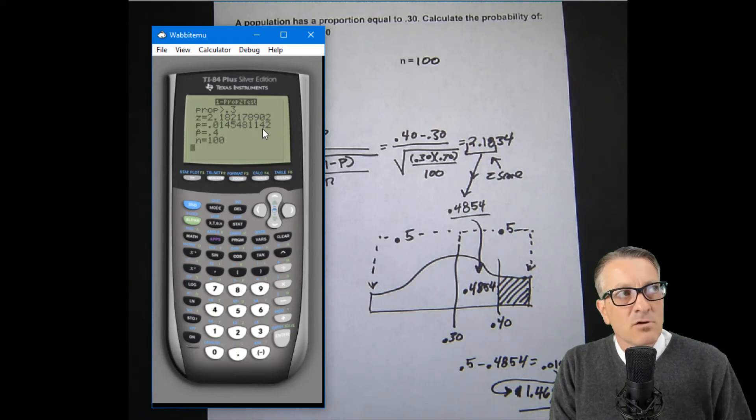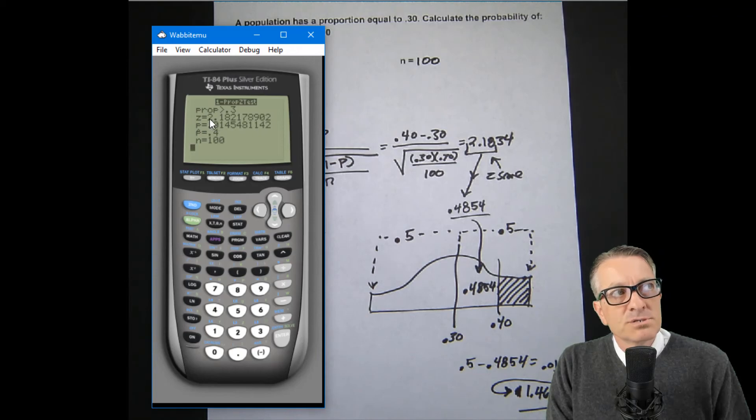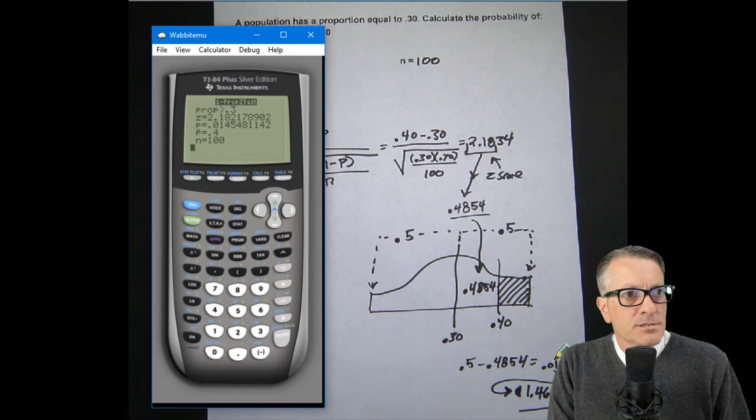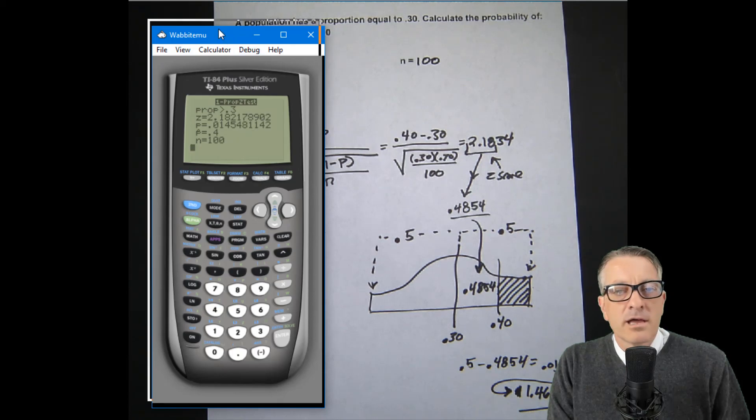What this does is it shows the proportion greater than 0.30, the inequality of what we're looking for, and then it shows the Z. The Z is what we've been using, and then the P. This is actually our answer, 0.0145, and we calculated 0.0146. So we're close enough. Thank you for watching.